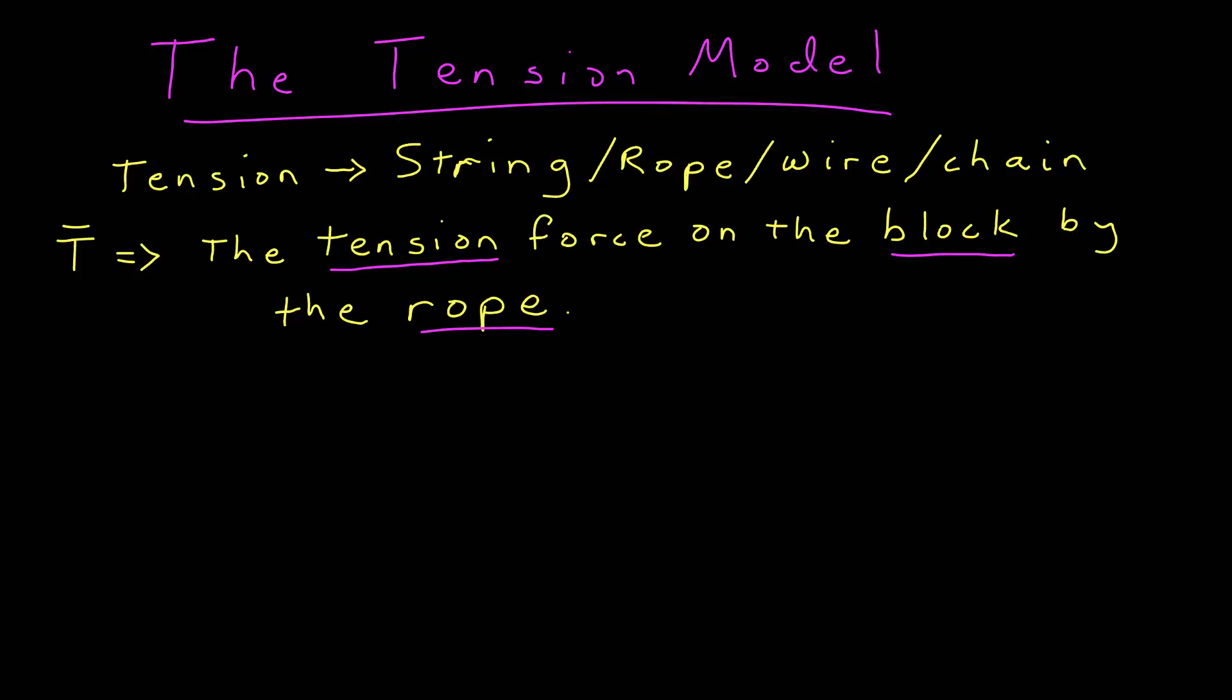The tension is the type of force. The block would be the object in this case. And the string or rope is the agent exerting the tension force. The first thing about the tension force is it connects two objects, but the string is the agent.